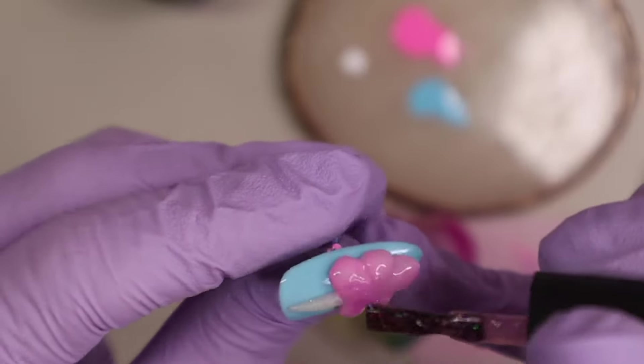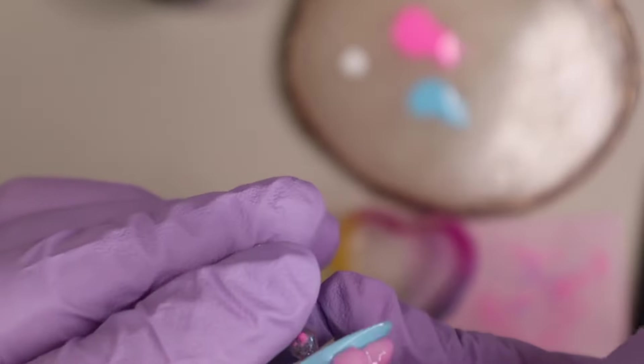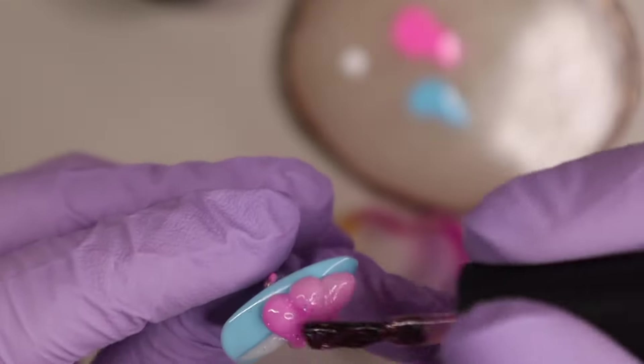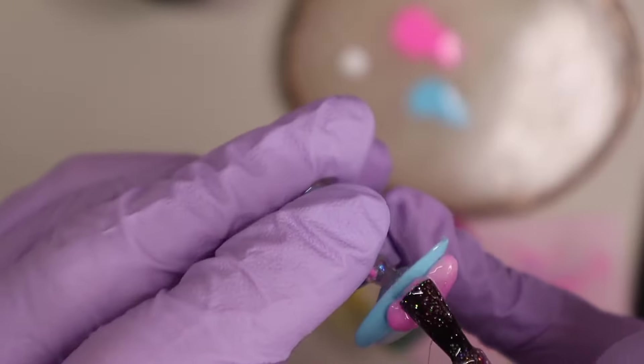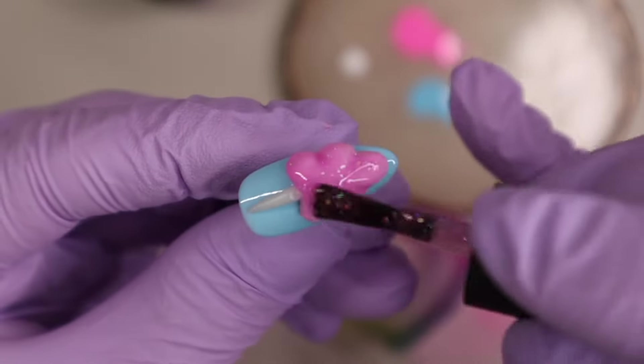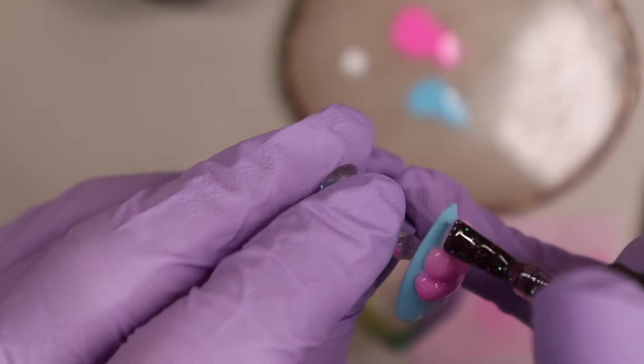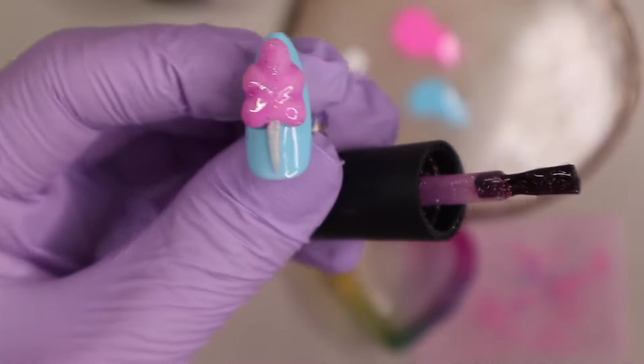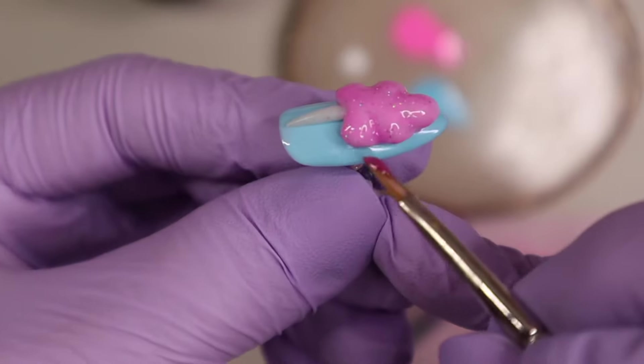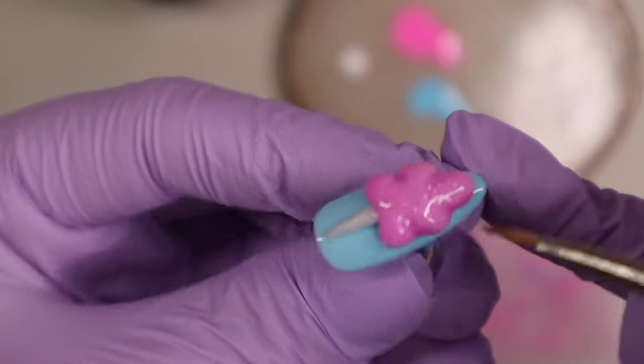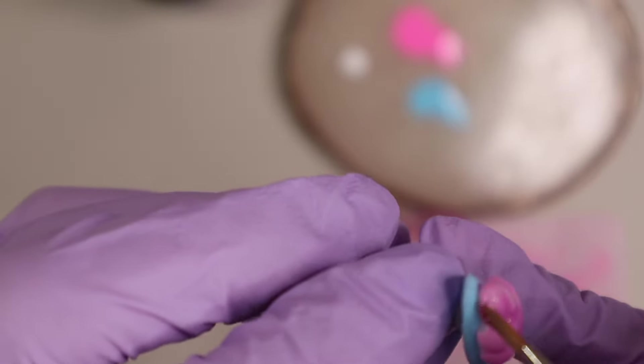Back to the cotton candy, here is the jelly glitter that I am putting over that pink layer we did earlier. Like I said, I just wanted to add some sparkle to this. I have some sparkle on the blue cotton candy on the other hand as well. I thought that would kind of give the appearance of the sugar crystals on cotton candy.